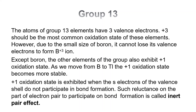The atoms of group 13 elements have 3 valence electrons, so +3 should be the most common oxidation state of these elements. However, due to the small size of boron, it cannot lose its valence electrons to form B³⁺ ions. Rather, it combines with other atoms to form covalent bonds.